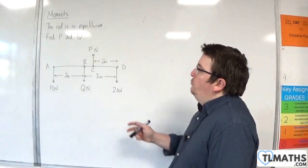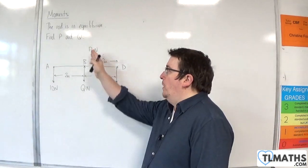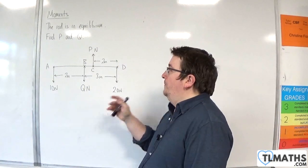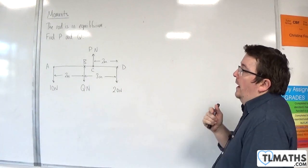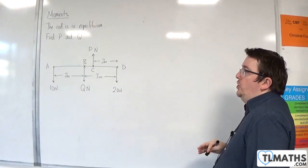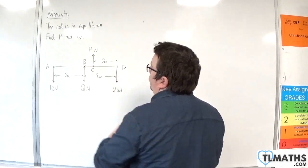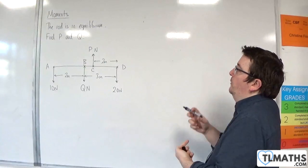It doesn't make sense to resolve forces first because we've got both unknowns in the vertical direction. So it makes sense to take moments about a point. Which point you choose, it probably makes sense to choose either B or C, seeing as that's where one of our unknowns is.